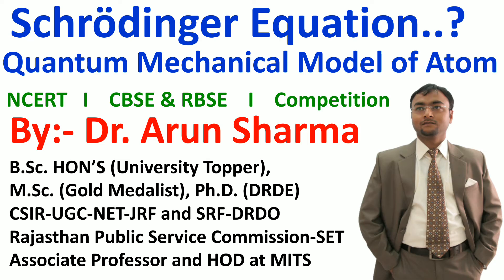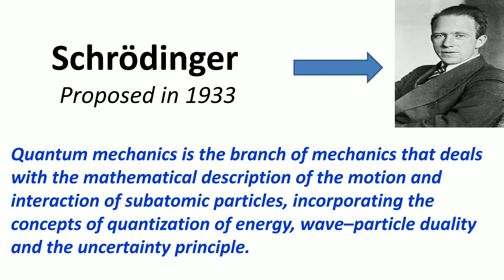Quantum mechanics was developed independently in 1926 by Werner Heisenberg and Erwin Schrödinger. Here, however, we will discuss the quantum mechanics which is based on the ideas of wave motion. The fundamental equation of quantum mechanics was developed by Schrödinger, and he was awarded the Nobel Prize in Physics in 1933.